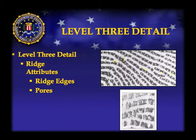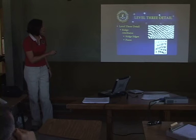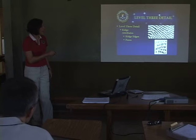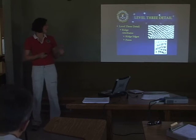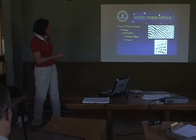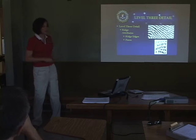You can see the level three detail. Different shapes of the ridges have actually been named, and we use those when making our decisions. Here is an enlargement of the friction ridge structure, and all the white circles you can see in there are the pores within the ridges.